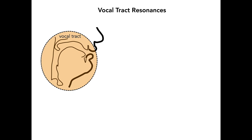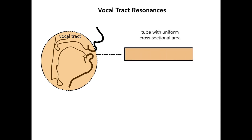To better understand how the vocal tract enhances the source spectrum, it is often easiest to begin by imagining the vocal tract to be a simple tube of uniform cross-section extending from the vocal folds to the lips. The tube is considered to be closed at the end closest to the larynx and open at the lips. The vibration of the vocal folds opens and closes the glottis — the airspace between the vocal folds — at the closed end to inject sound into the vocal tract.